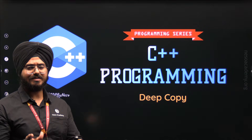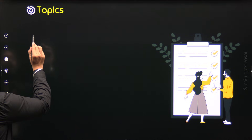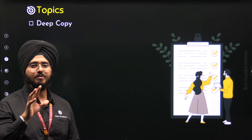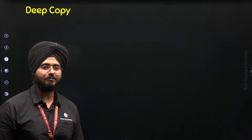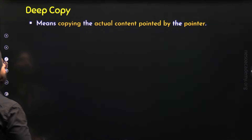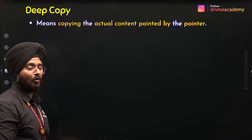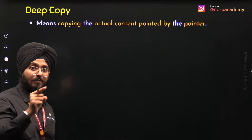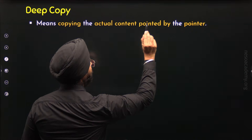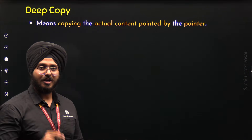So without any further delay, let's get started with this lecture. There is only one topic and the topic name is Deep Copy. Let's understand what is Deep Copy and how to perform Deep Copy in C++. Deep Copy means copying the actual content pointed by the pointer. We copy the actual content pointed by the pointer, not the address stored in the pointer. That is why it is called Deep Copy — because we go deeper to the actual content pointed by the pointer and copy that content instead of copying the address.